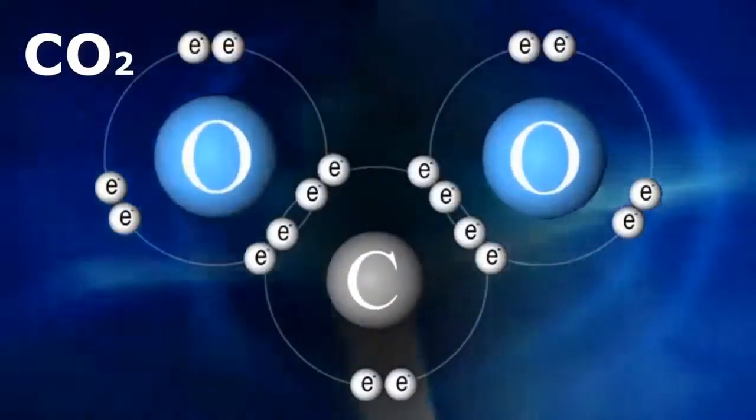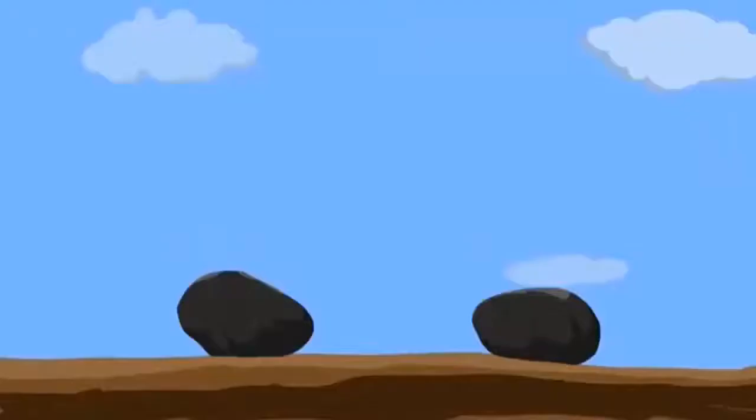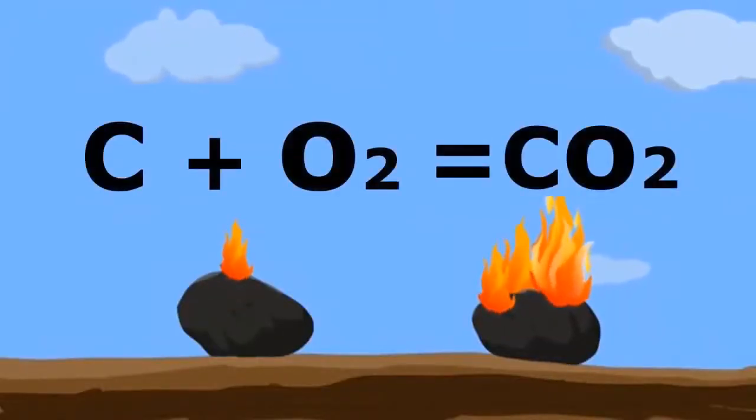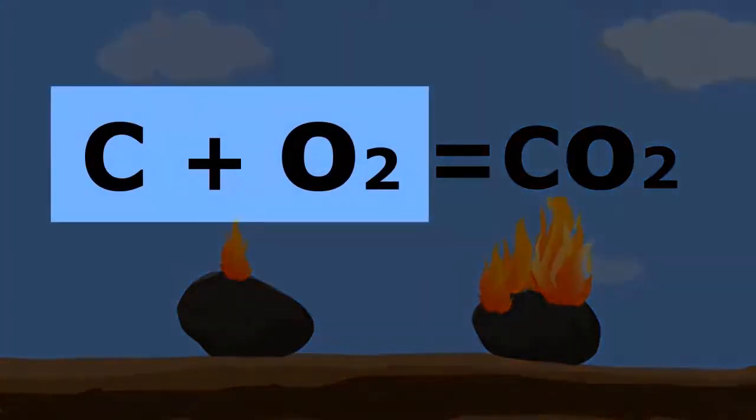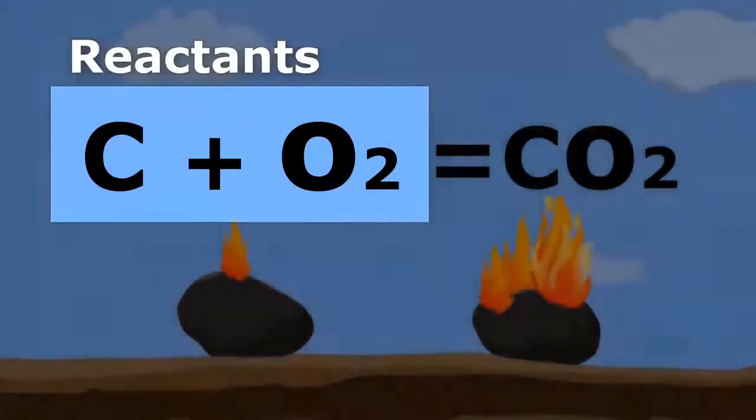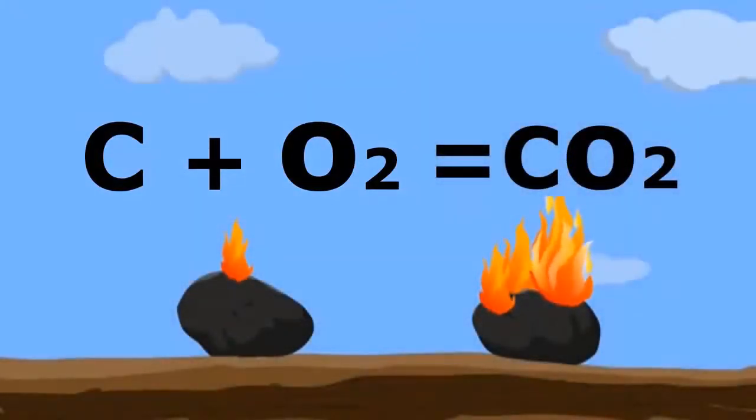During this chemical reaction, the change in the layout of the atom is seen in the following format: C plus O2 equals CO2. Substances which take part in chemical reactions are called reactants.